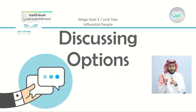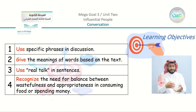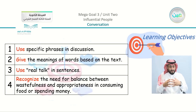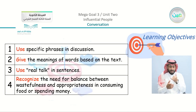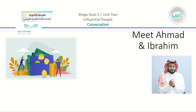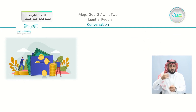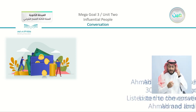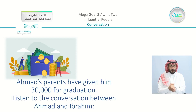There are discussing options, as I just started. The discussing options are what we are going to take in our conversation lesson. So we are going to start with the objectives. Number one: to use specific phrases in discussion. Number two: to give the meanings of words based on the text. Number three: to use real talk in sentences. And number four: to recognize the need for balance between wastefulness and appropriateness in consuming food or spending money. Now we are going to meet Ahmed and Ibrahim. They are the characters in our conversation lesson. We are going to listen to the conversation between them on the topic we just mentioned. Ahmed's parents have given him 30,000 for graduation.